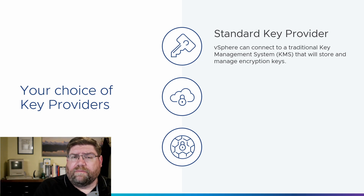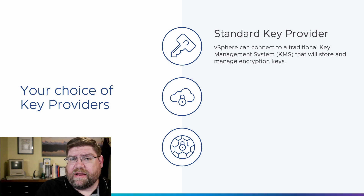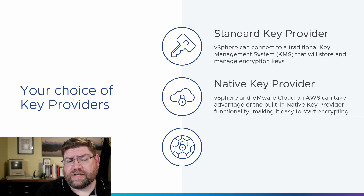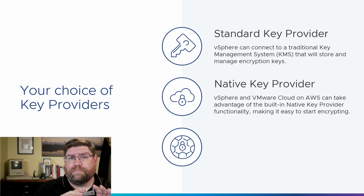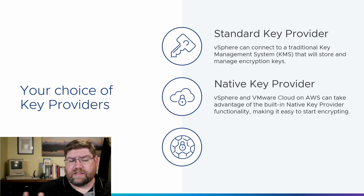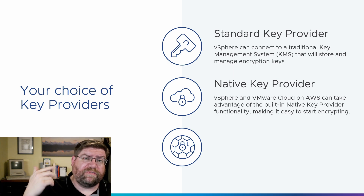Folks told us that was a level of complexity they might not be able to handle, might not need, but they want to turn on encryption and want VTPMs. So in vSphere 7, we invented native key provider, so that vSphere can turn on encryption and do the key management itself. vSphere, VMware Cloud on AWS, Cloud Foundation — all that stuff can take advantage of this to enable VM encryption, vSAN encryption, VTPMs, all that stuff.